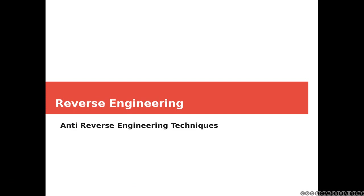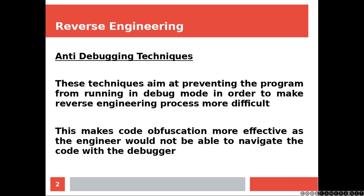Hi everyone and welcome. Today we'll talk about anti-reverse engineering techniques. These techniques aim at preventing the program from running in debug mode in order to make the reverse engineering process more difficult. This makes code obfuscation more effective as the engineer would not be able to navigate the code with the debugger.